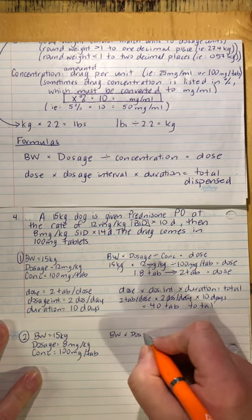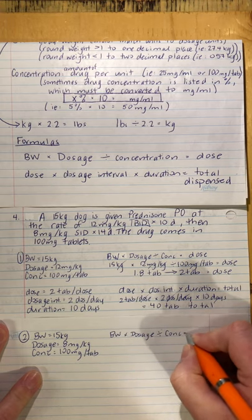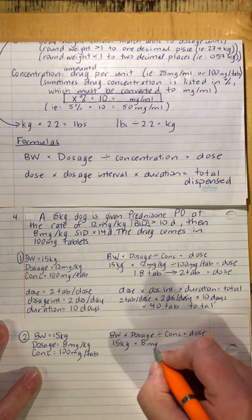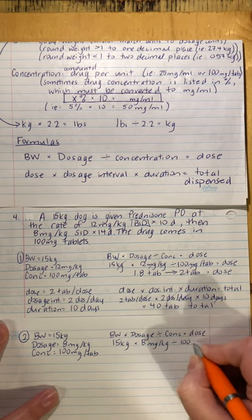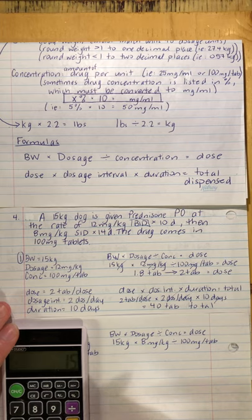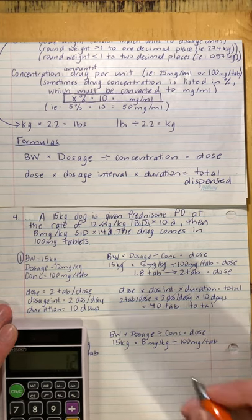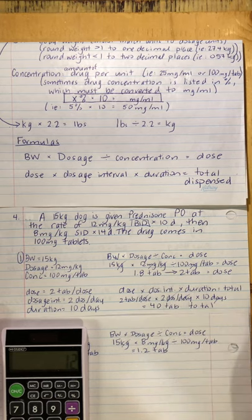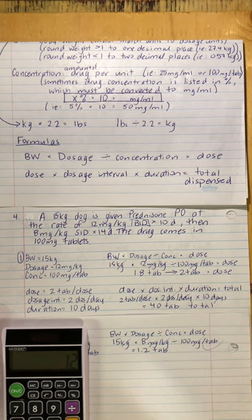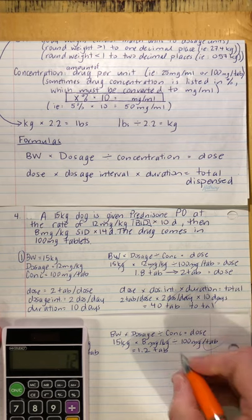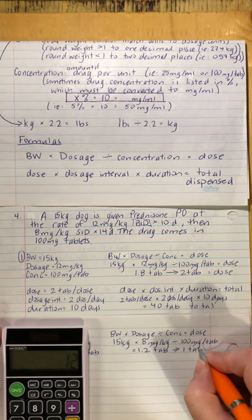Writing the formula: body weight times dosage divided by concentration equals dose. So 15 kilograms times 8 milligrams per kilo, divided by 100 milligrams per tab. On the calculator: 15 times 8 divided by 100 gives 1.2 tabs. Kilograms cancel, milligrams cancel, leaving tabs. Can I give 1.2 tabs? No — I can't give 0.2 of a tablet. So in this case, I round down to 1 tablet as the dose.